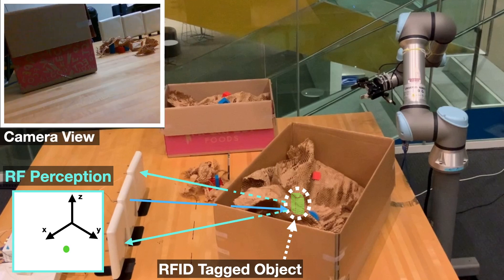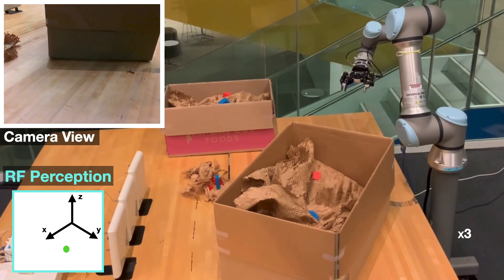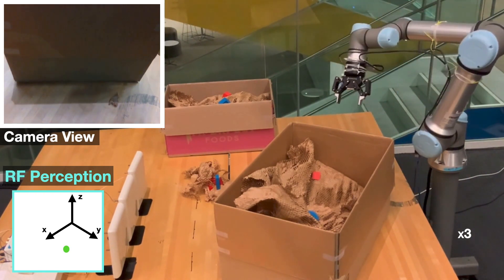In contrast, the system cannot see the object behind an occlusion using the camera. By fusing camera visual data with RF perception, the robot can maneuver efficiently around obstacles and move toward the object.